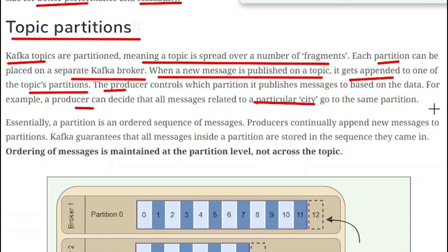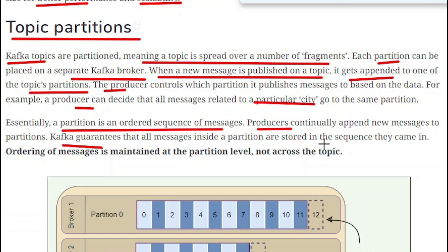Whenever any message is published for a particular city, it goes to the partition that is only storing the information of that particular city. Essentially, a partition is an ordered sequence of messages. Producers continuously append new messages to the partitions. Kafka guarantees that all the messages inside a partition are stored in the sequence they came in. Ordering of messages is maintained at the partition level, not across the topic.